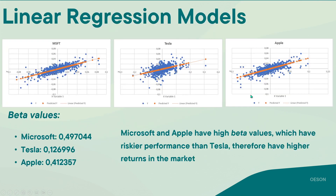Next, let's move on to the linear regression models. We are comparing the dataset of each company to the SP500 dataset to evaluate the risk performance of the three companies. When we perform linear regression on the three companies, we get these beta values. Higher beta values indicate higher risk in the stock performance. Microsoft currently has a slope of approximately 0.5, which is the highest of all three, so Microsoft clearly has the riskiest performance compared to the others.